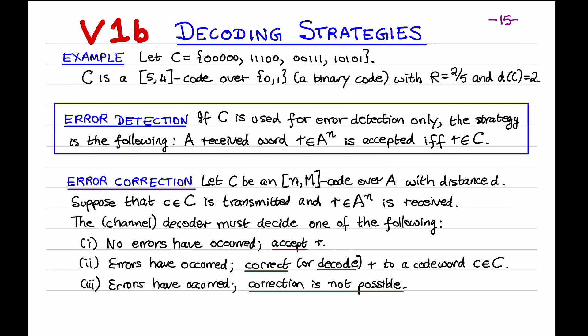What's more interesting is if the code is used for error correction. Let C be an arbitrary NM block code over an alphabet A, and suppose that C has distance D. Suppose that a codeword C is transmitted and R is a received word. By one of our channel assumptions, the channel does not delete any symbols, and so the received word R has the same length N as the transmitted codeword.